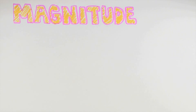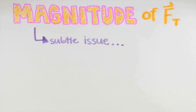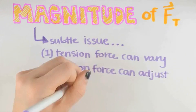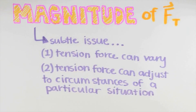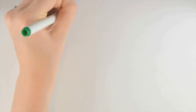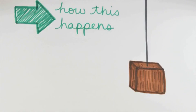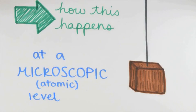Now, let's discuss the magnitude of the tension force. This is a subtle issue where there is no single answer, because the tension force can vary, can adjust to fit the circumstances of the particular situation we're examining. To understand how this happens, let's start with a mental picture of the wire at a microscopic, at an atomic level.